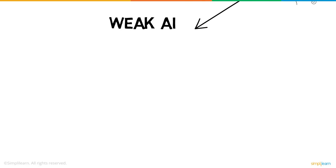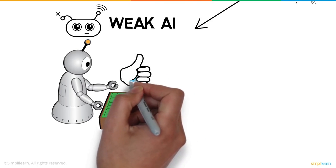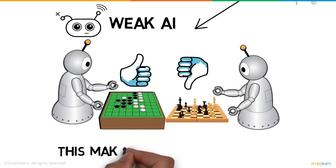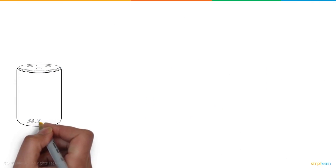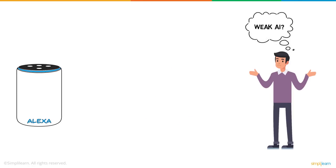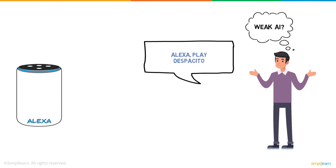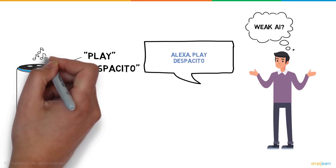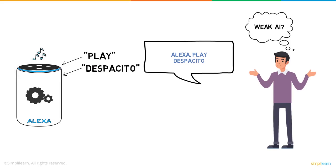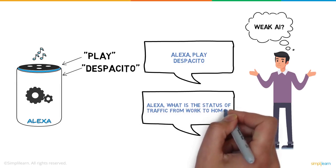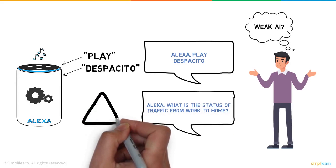Weak AI, also called Narrow AI, focuses solely on one task. For example, AlphaGo is a maestro of the game Go, but you can't expect it to be good at chess — making it a weak AI. You might say Alexa is not a weak AI since it can perform multiple tasks. But when you ask Alexa to play Despacito, it picks up the keywords and runs a program it is trained to. Alexa cannot respond to a question it isn't trained to answer.